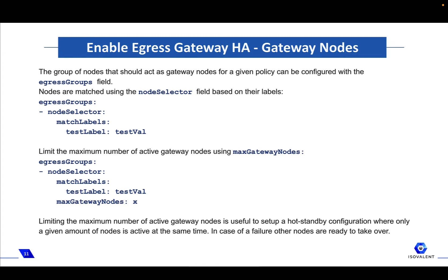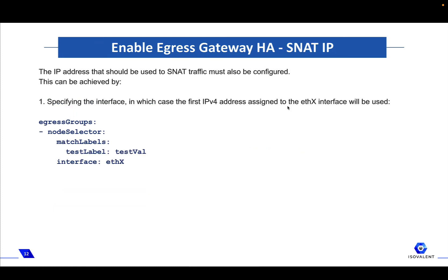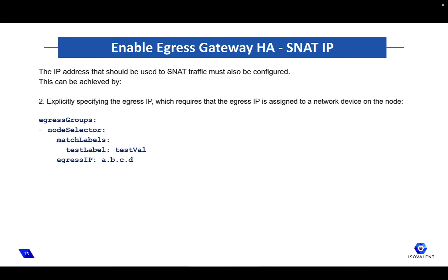The group of nodes that should act as a gateway node for a given policy can be configured with the egress group field. Nodes are matched using the node selector field based on their labels. You can limit the number of active gateway nodes using the maxGatewayNodes field, which is very useful for setting up a hot standby configuration where only a given number of nodes is active at the same time. We also need to configure the IP address used to source network traffic leaving the nodes. This can be achieved by either specifying the interface — in which case the first IPv4 address assigned to that interface will be used — or you can explicitly specify the egress IP address, which requires that the egress IP is actually assigned to a network device on the nodes.